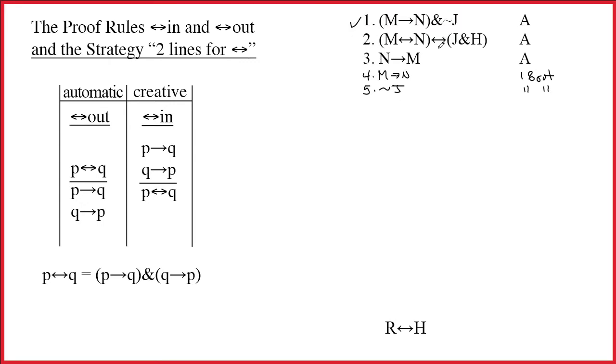Line 2, we notice, has a double-arrow as its main connective. Well, that's great news. Just like an ampersand, you can immediately break up a double-arrow. Of course, a double-arrow breaks into two single-arrows.